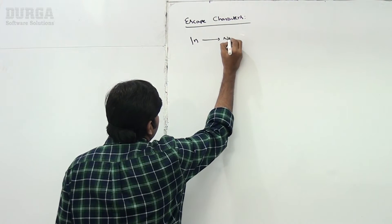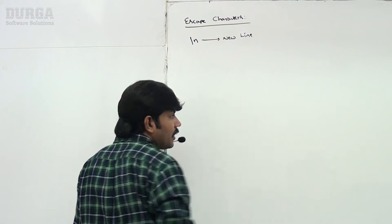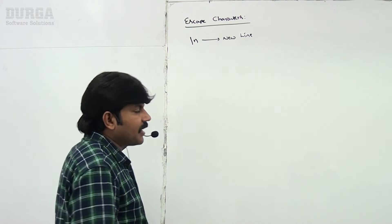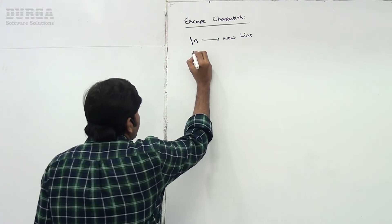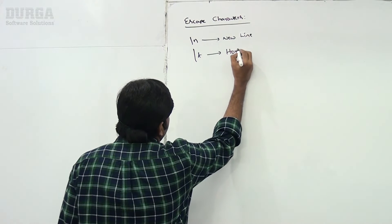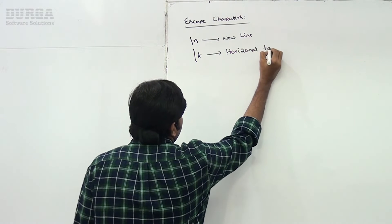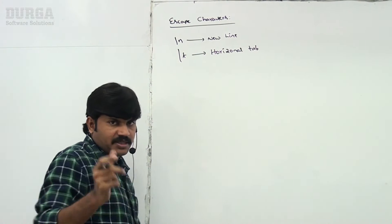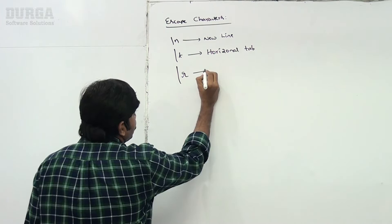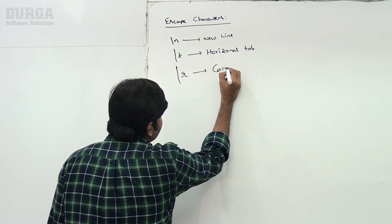Backslash n means new line. I will explain with an example. Backslash t is horizontal tab — tab means a sequence of spaces. Backslash r means a carriage return.